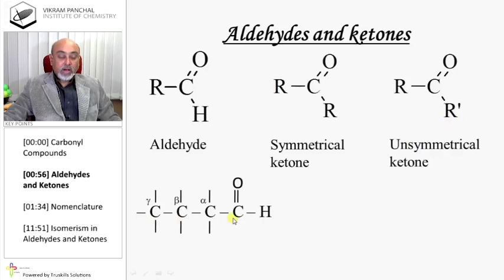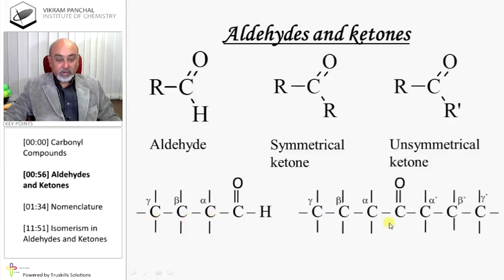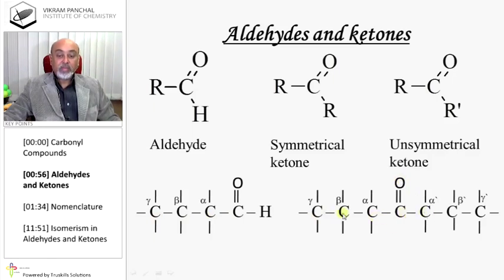The carbon attached to the CHO group is known as the alpha carbon, then beta, gamma, etc. In a ketone, the first carbon attached to C=O on both sides is known as alpha and alpha prime.